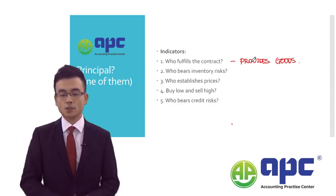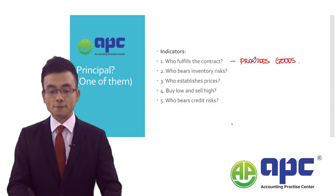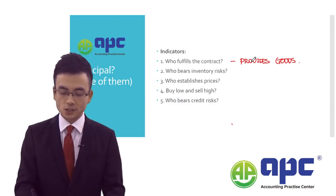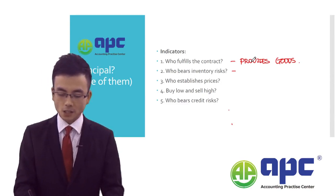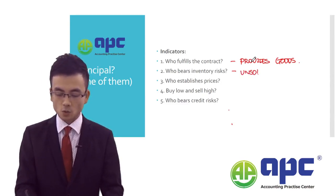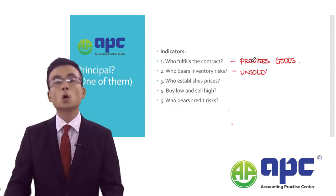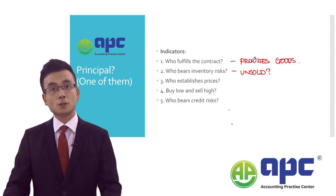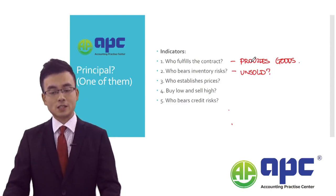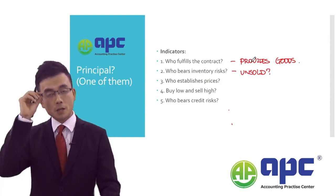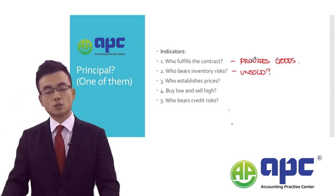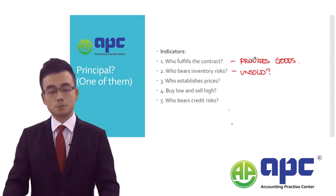Second, who bears inventory risks? That means if inventories are unsold, who bears those losses? If the party bears those losses, then that party would be a principal.